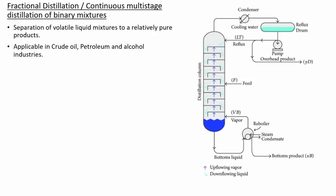Fractional distillation is most commonly used in crude oil or petroleum production. Here we will focus on binary mixtures, but in crude oil the feed may contain different organic compounds, and separation of multiple components can occur at each stage of the distillation column. This process is also applicable in alcohol industries.